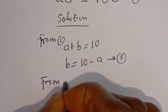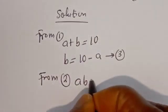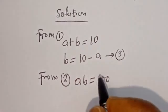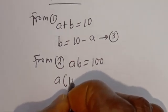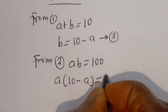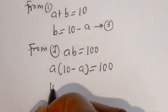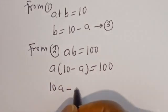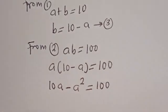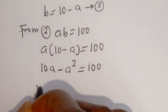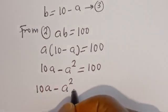From equation 2, we want to substitute for b. We have a times b equal to 100. When b is 10 minus a, we have a times bracket (10 minus a) is equal to 100. Opening the brackets: a multiplied by 10 gives 10a, minus a multiplied by a gives a squared, so 10a minus a squared is equal to 100.